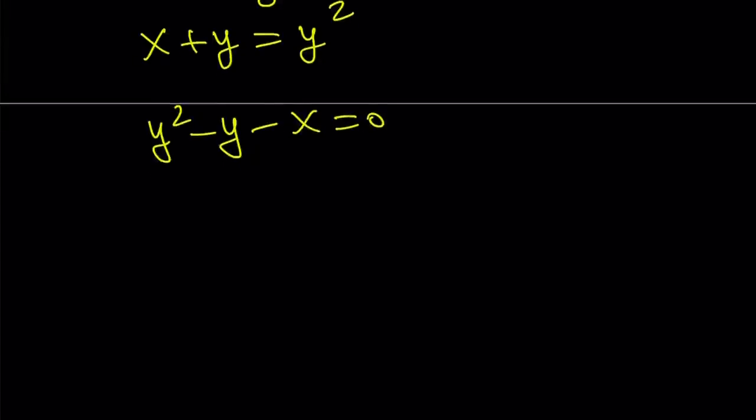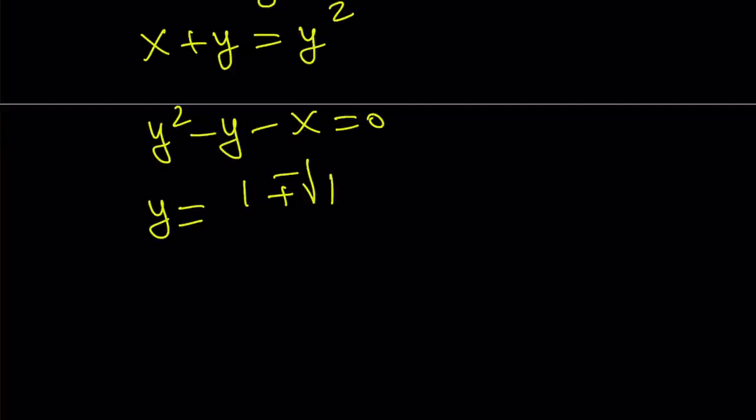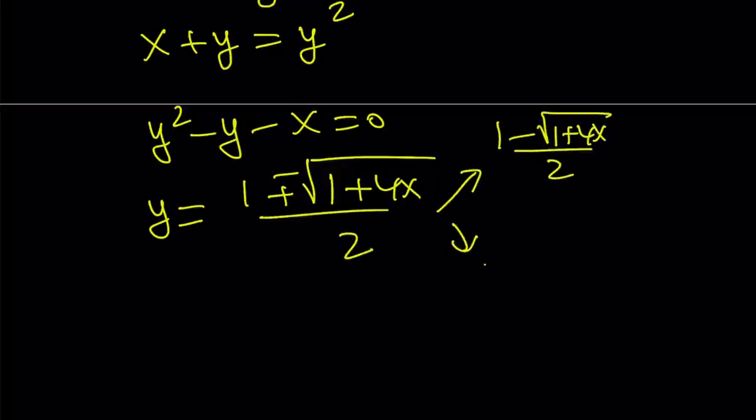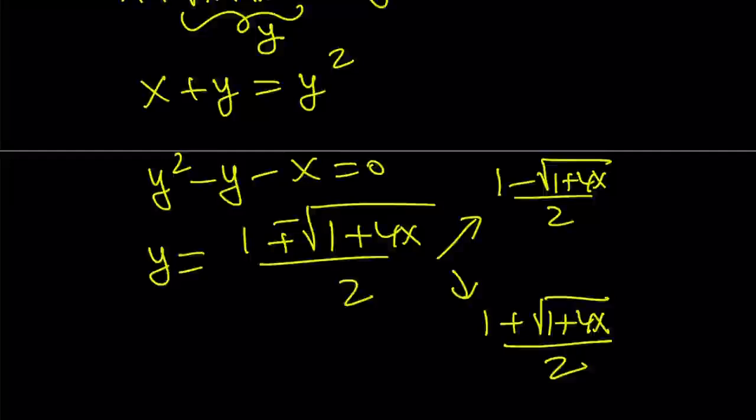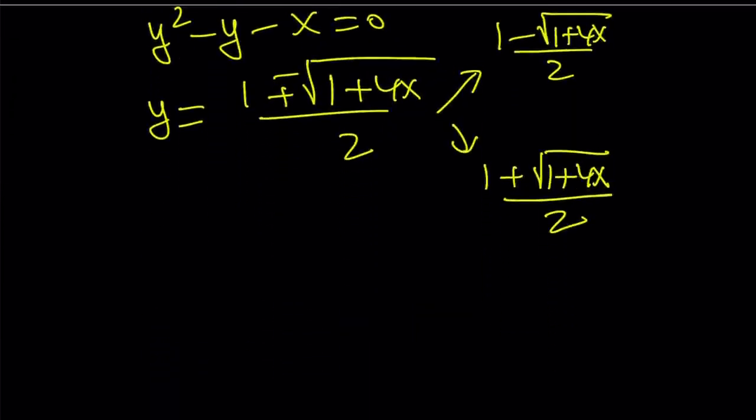And from here, we get a quadratic y squared minus y minus x equals 0. This quadratic has two solutions. And I can go ahead and write them negative b plus minus the square root of b squared, which is 1 minus plus 4x. And that all over 2. But notice that this one is no good because 1 plus 4x, when you square root 1 plus 4x, you get an expression that is greater than 1. Right. If x is positive. Obviously, you don't want x to be negative in this case.